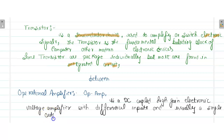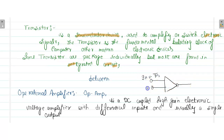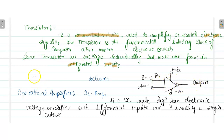The op-amp has a differential input and usually a single output. The basic structure of the op-amp has an inverting terminal, a non-inverting terminal, a positive VCC, a minus VCC, and an output. This is the basic diagram of the op-amp.